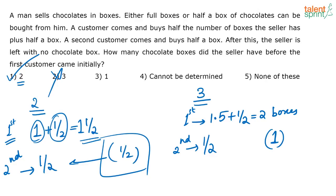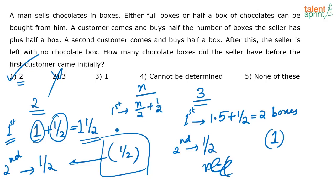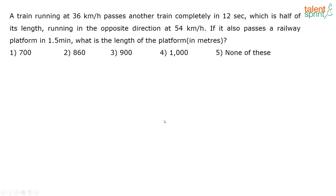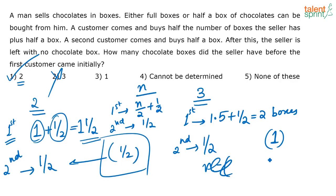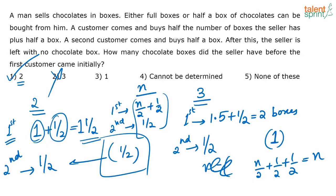If you set up an equation: there are n boxes total. The first customer is buying n/2 plus 1/2 boxes. The second customer is buying half a box. Since after both customers buy, the seller has nothing left, we get: n/2 + 1/2 + 1/2 = n. Solving this equation also gives the value of n as 2.